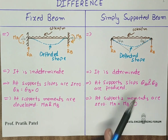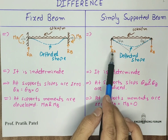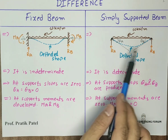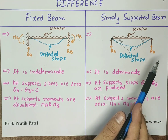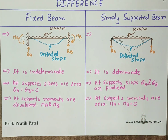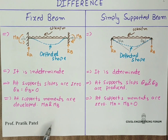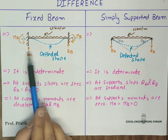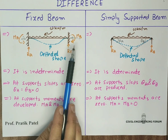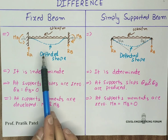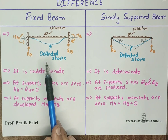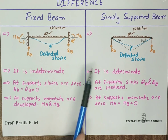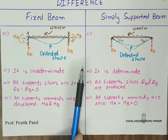For the simply supported beam, only vertical reactions RA and RB are present. Here we will see the reactions and moments — these reacting moments and reactions oppose the applied loading condition.